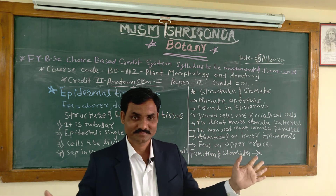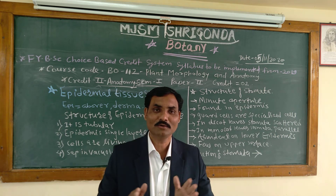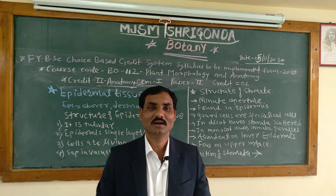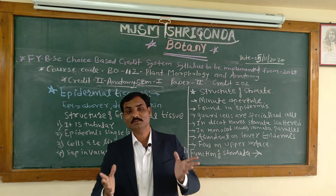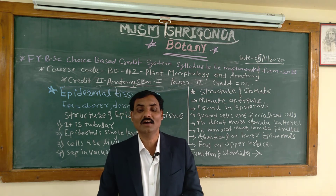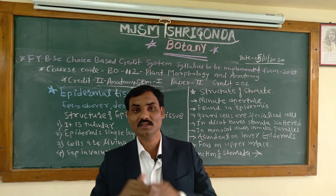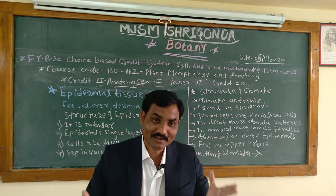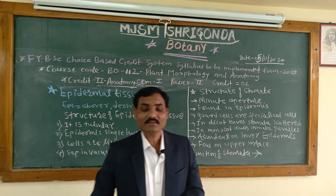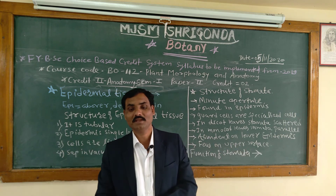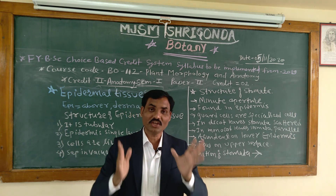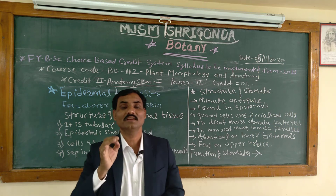Stomata are absent in the roots, which are the underground part of the plant. Each stoma may be interpreted as an intercellular space between two highly specialized epidermal cells called guard cells. Guard cells are specialized epidermal cells with dense cytoplasm, chloroplasts, starch grains, and unevenly thickened walls.